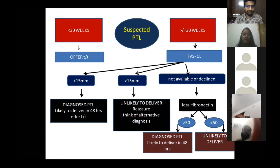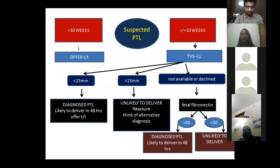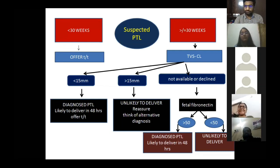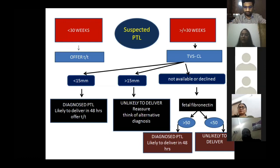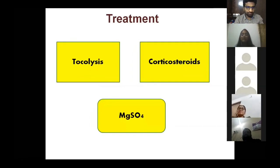Management algorithm: for established or diagnosed preterm labor, offer treatment immediately. For suspected preterm labor, if less than 30 weeks, offer treatment straight away. If 30 weeks or more, do transvaginal ultrasound for cervical length — if less than 15 mm, diagnose preterm labor and offer treatment; if more than 15 mm, reassure and arrange follow-up. If TVS is declined, check fetal fibronectin: if more than 50 ng/mL, diagnosed preterm labor and offer treatment; otherwise, reassure. If the patient refuses both tests, offer treatment.